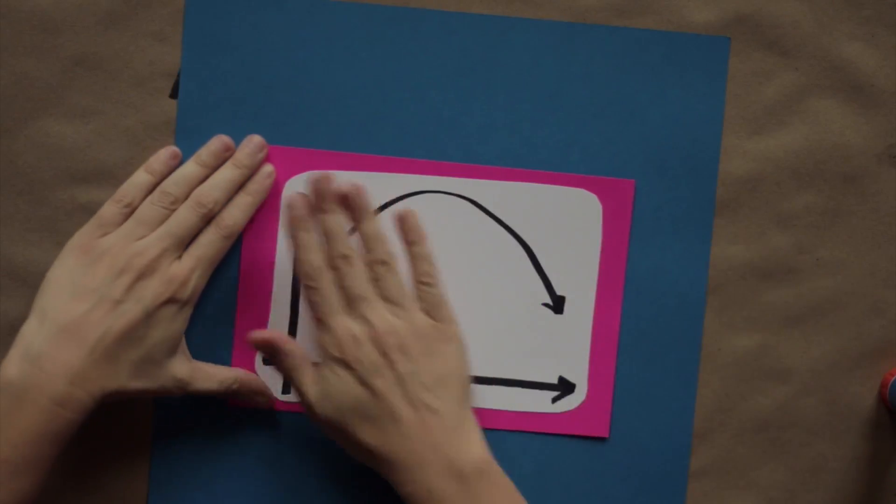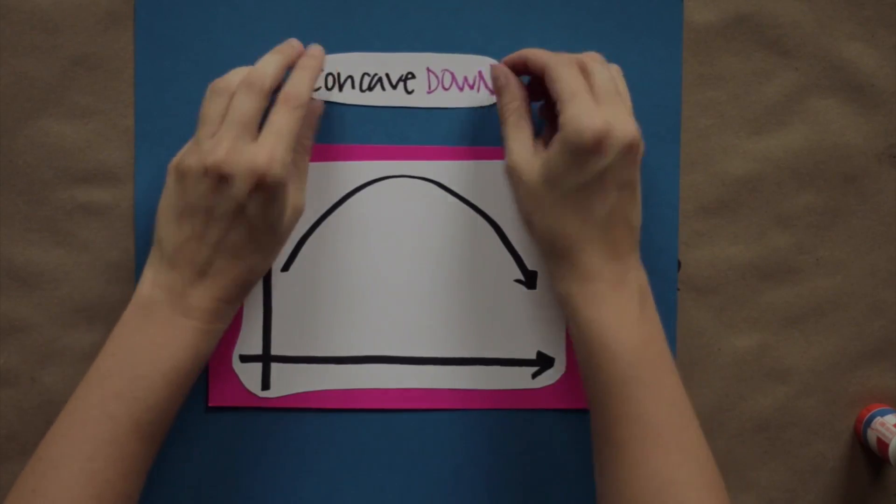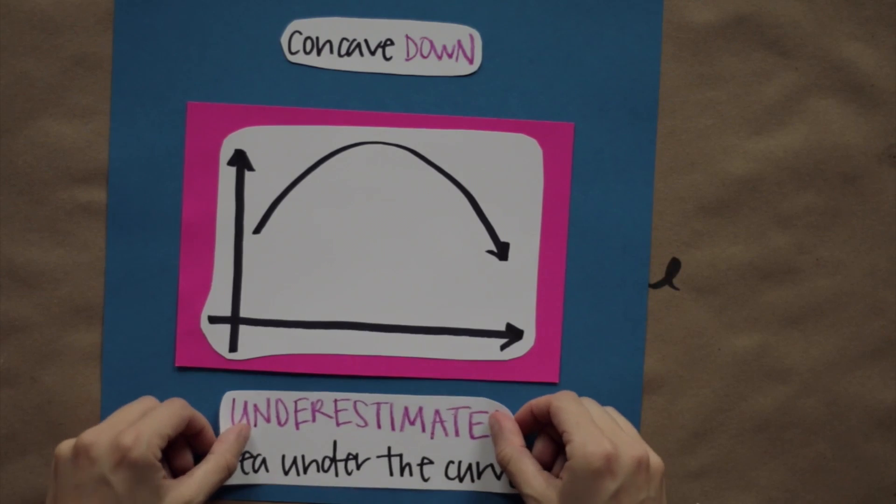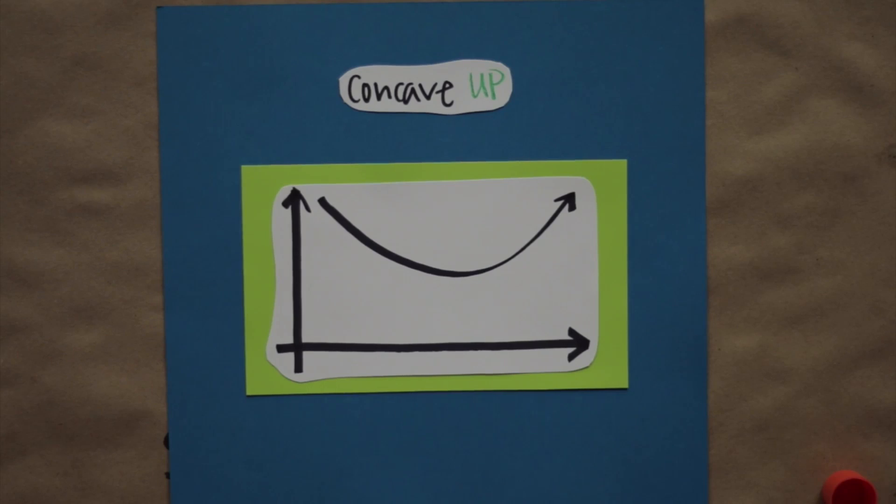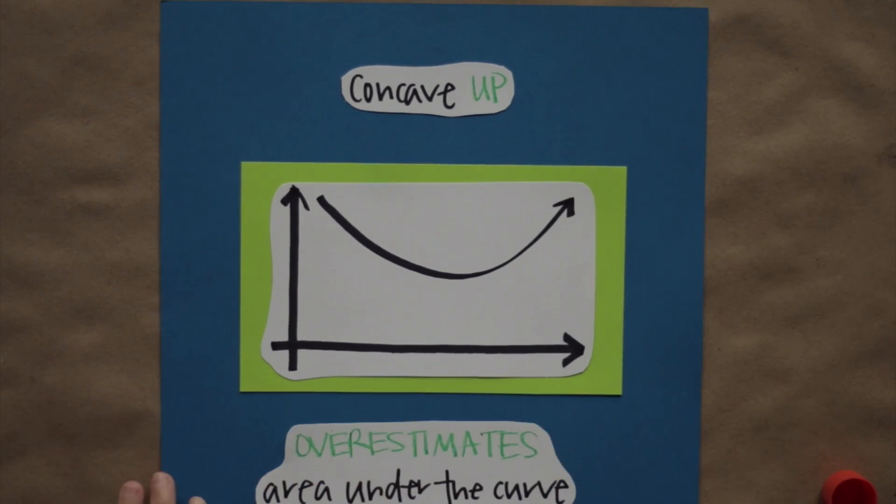In general, when the function is concave down, trapezoidal rule will underestimate the area. And when it's concave up, trapezoidal rule will overestimate the area.